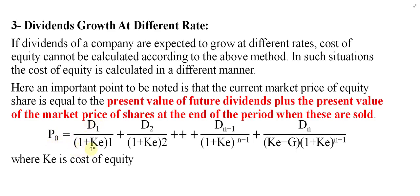The formula is: P₀ = D1/(1+Ke)¹ + D2/(1+Ke)² + ... + D(n-1)/(1+Ke)^(n-1) + Dn/((Ke − G) × (1+Ke)^(n-1)). This formula is based on the assumption that the value of a security — especially equity — equals the present value of all dividends received, as well as the present value of the price at which we sell the share at the end.